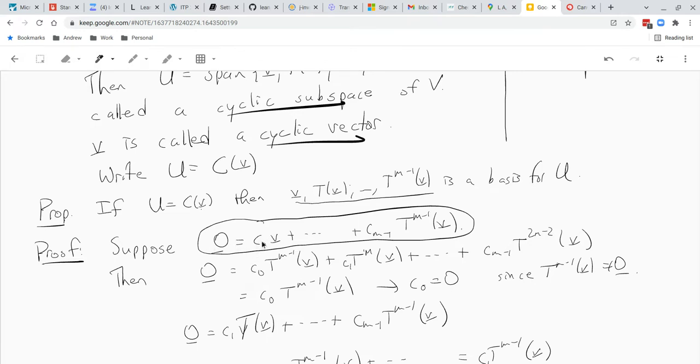And all we do is we apply t to the m minus 1 to both sides. Okay, so our first term will be c0 t to the m minus 1 of v. Then we get c1 t to the m of v, well, t to the m of v is zero, right?